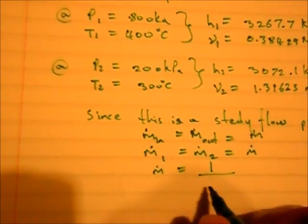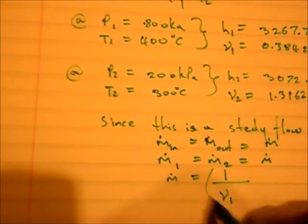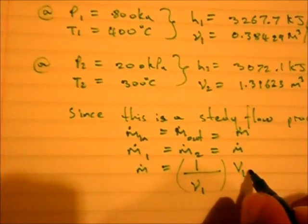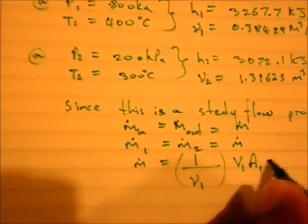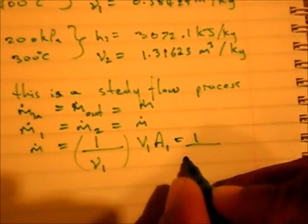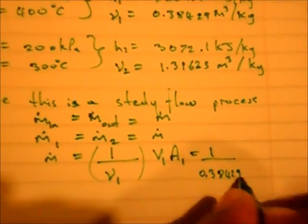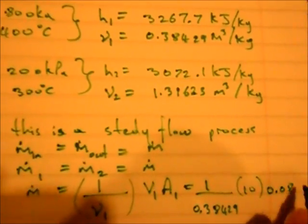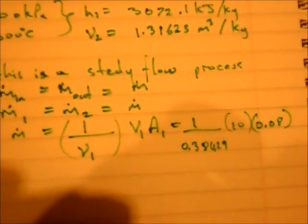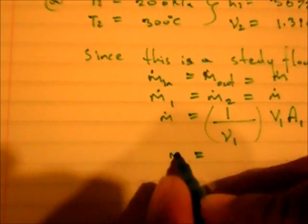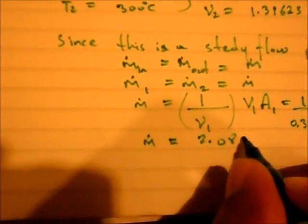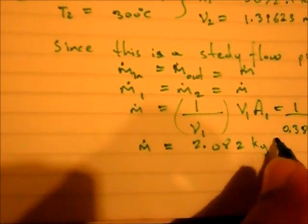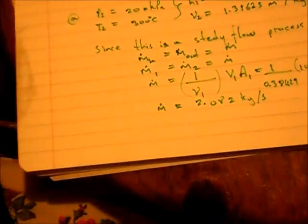M dot equals 1 over specific volume - which is your density term - times V1 times A1, which is equal to 1 over 0.38429 times 10 - pause, you see your velocity up here is 10 meters per second - and your area is 0.08 square meters converted from squared centimeters. And you get an answer of m dot equal to 2.082 kilograms per second, and that is your flow rate. Okay.